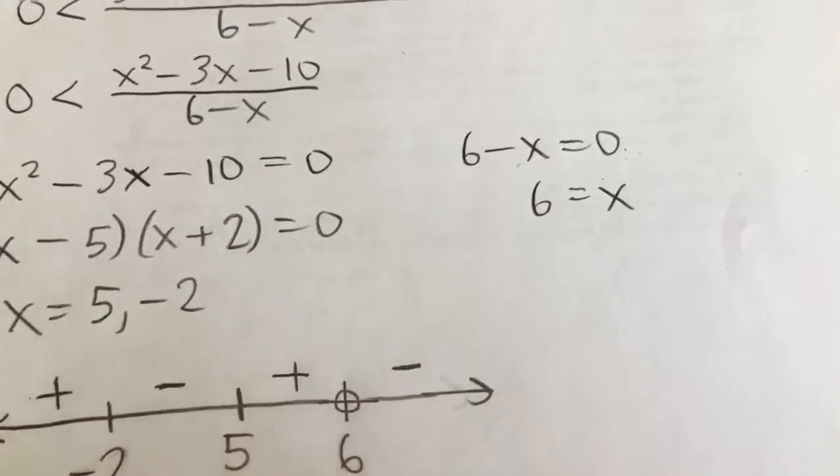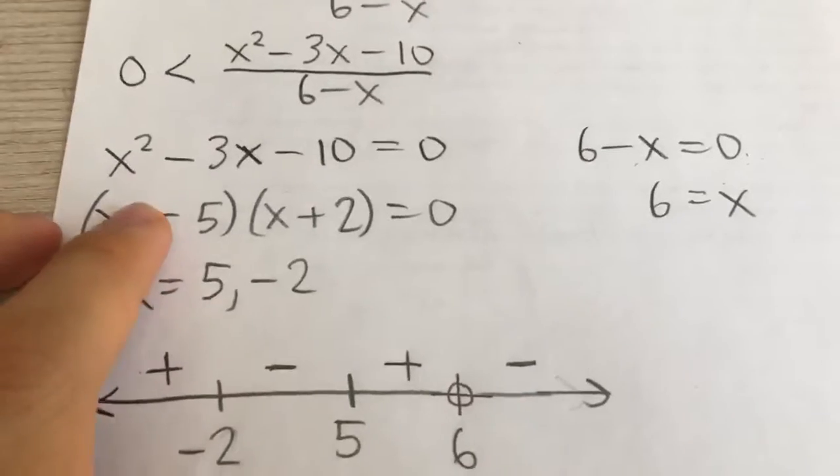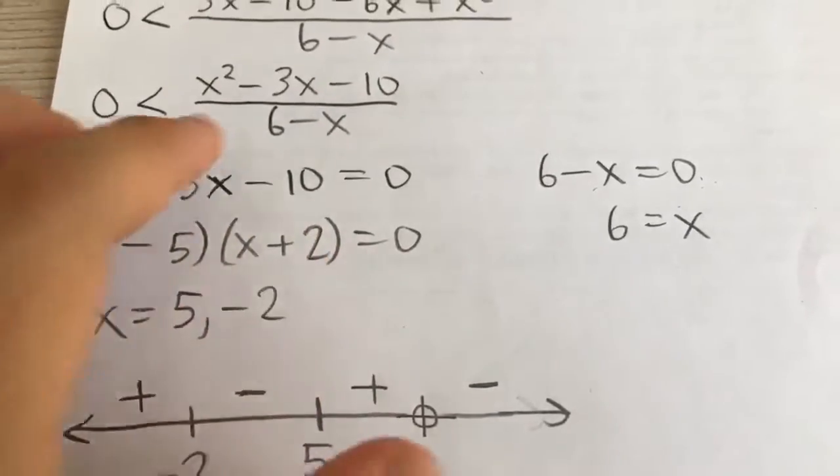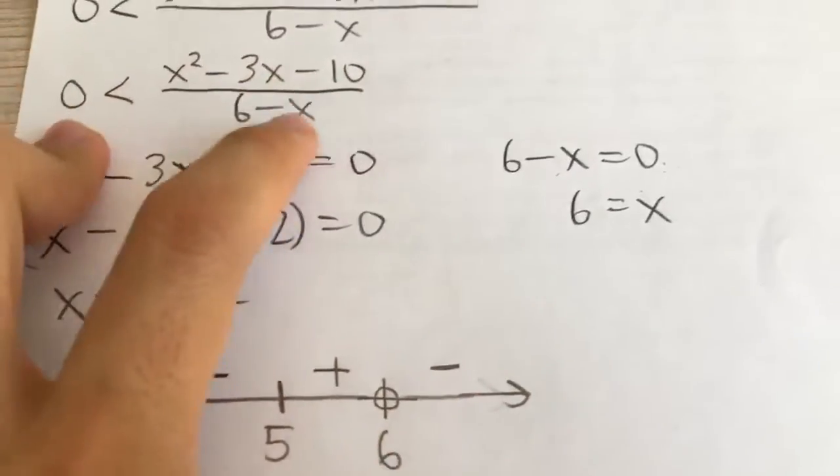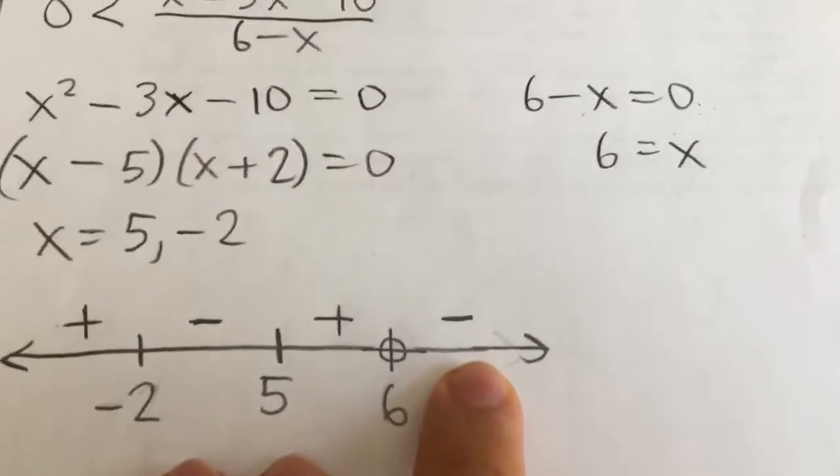And then finally, greater than 6, say I plug in 10. Well, this will be positive. This will be positive. But the denominator will be 6 minus 10. That's negative. So the numerator is positive. The denominator is negative. So it's negative in this region.